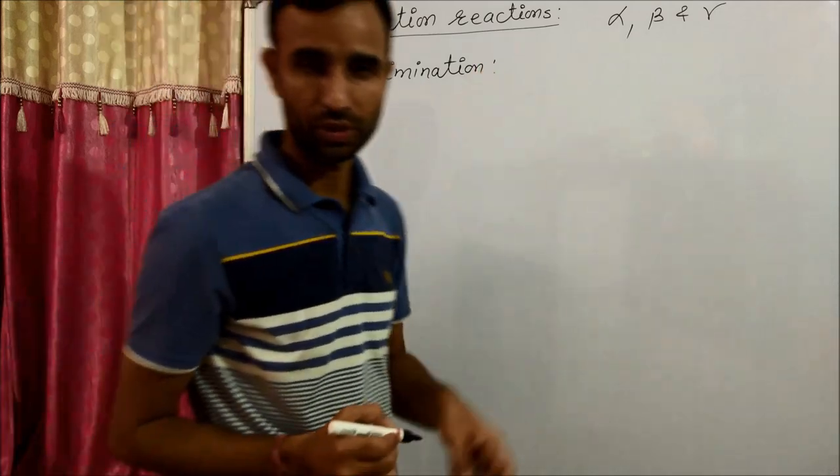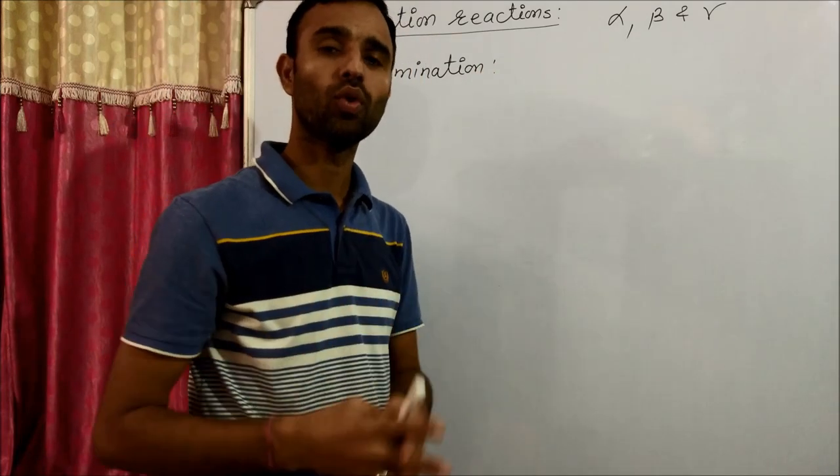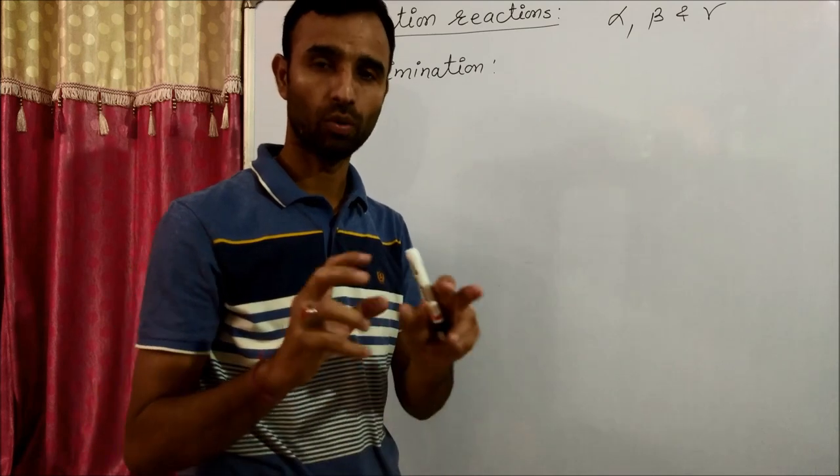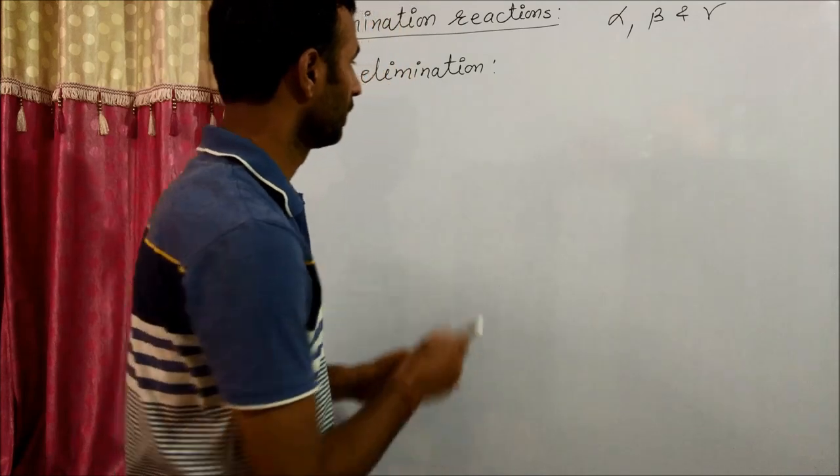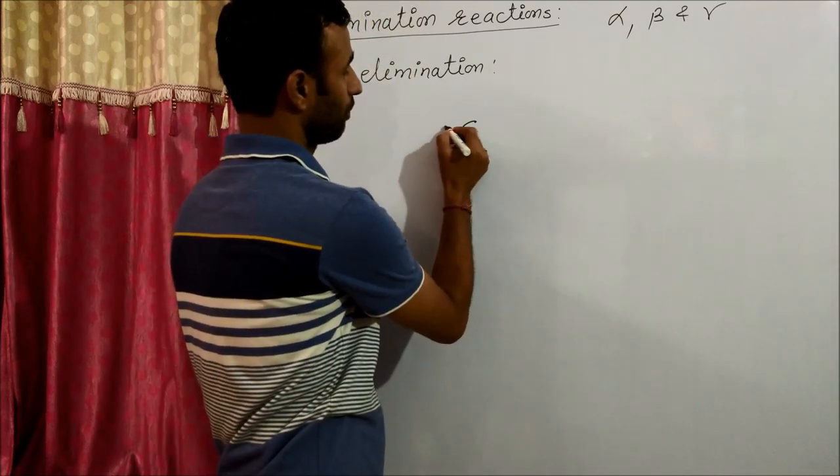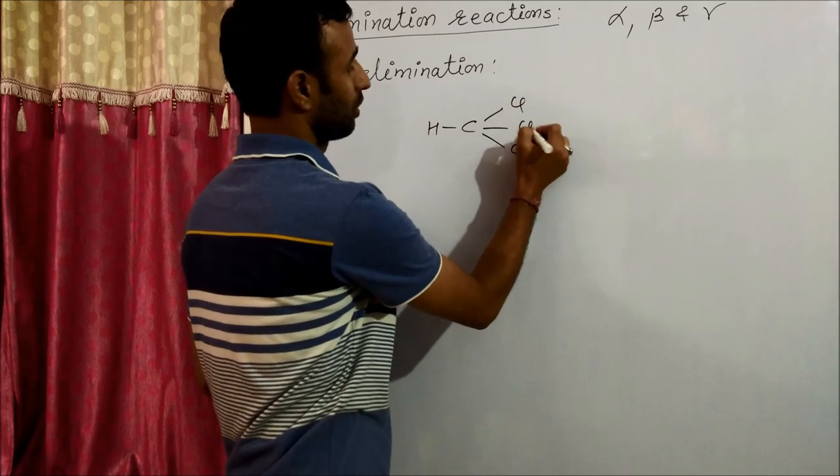First, alpha elimination. In alpha elimination, two atoms or groups are removed from the same carbon atom. For example, we have chloroform.